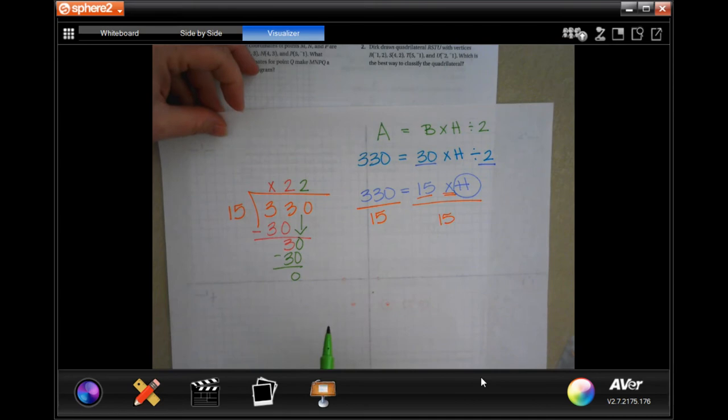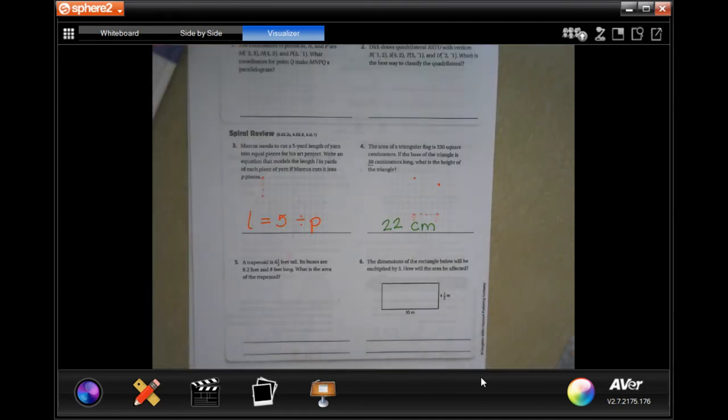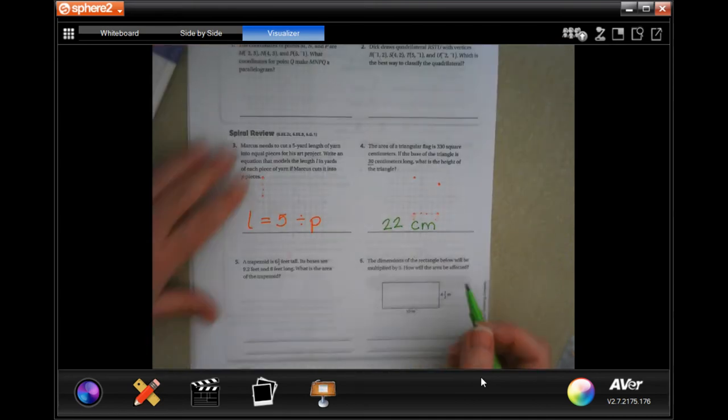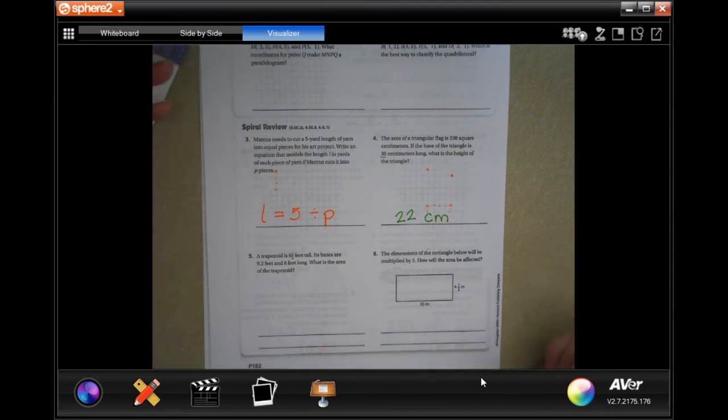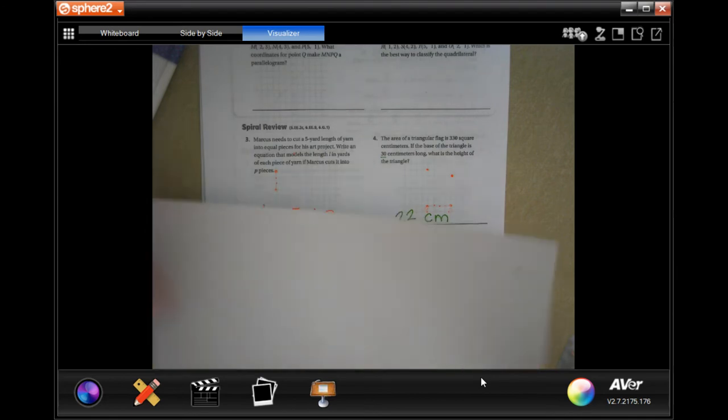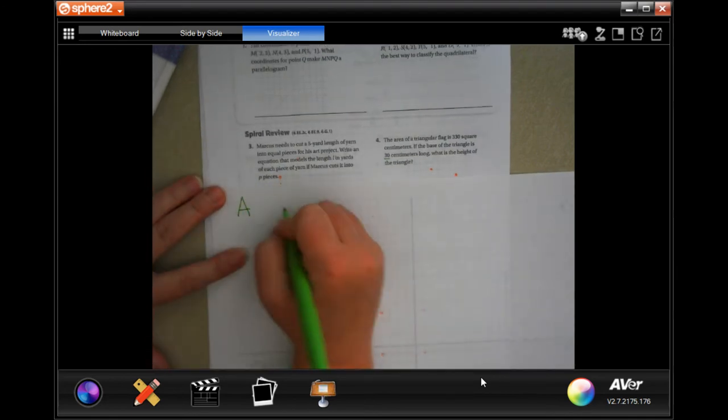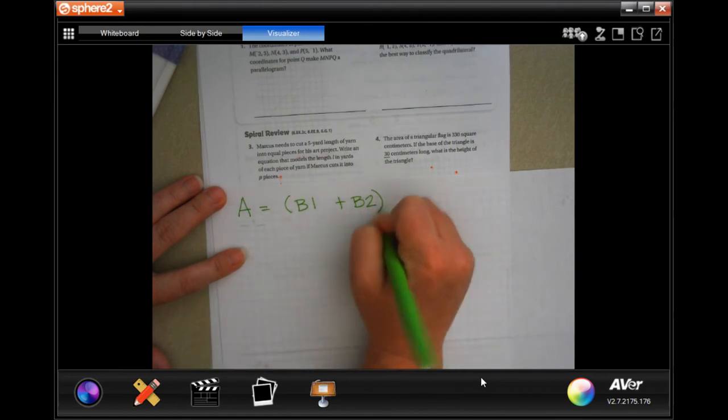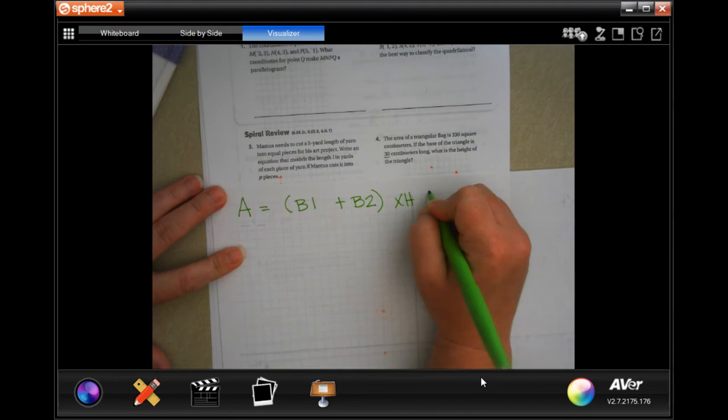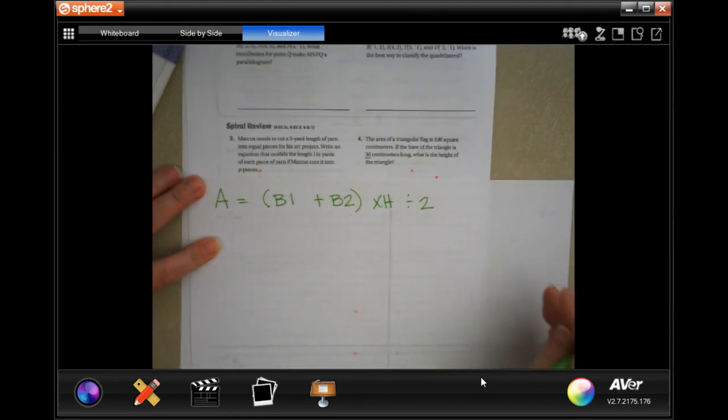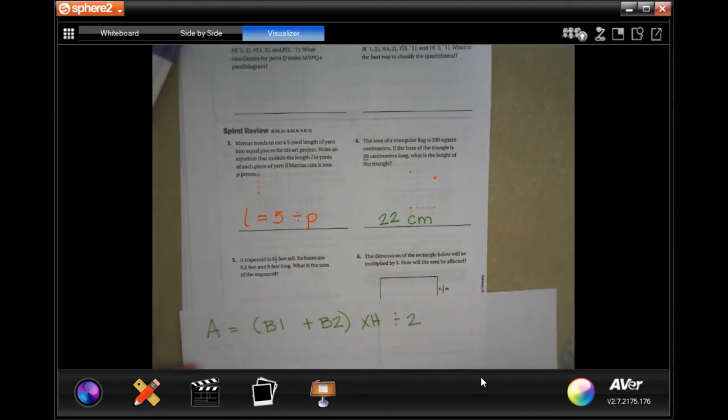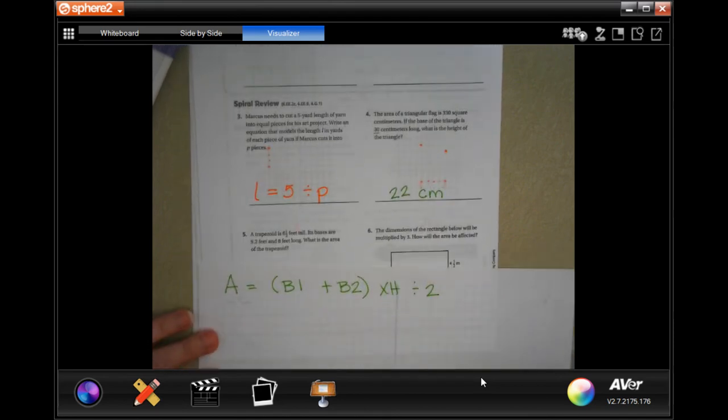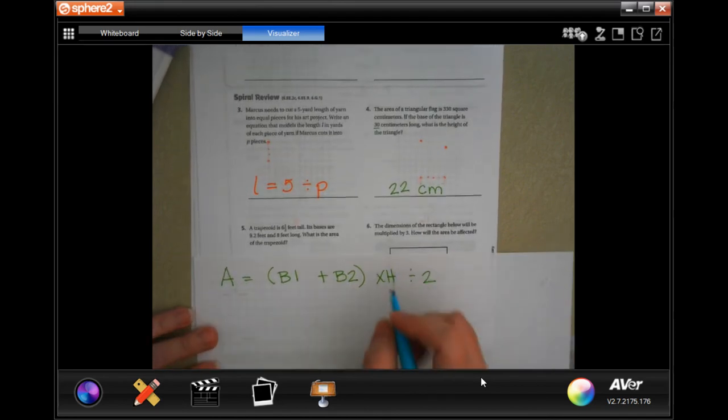Now make sure you pause and write down your work. Okay? All right. So a trapezoid is 6 and a half feet tall. Its bases are 9.2 feet and 8 feet. What is the area of the trapezoid? Okay. Well, the area of a trapezoid is base 1 plus base 2 times the height divided by 2.